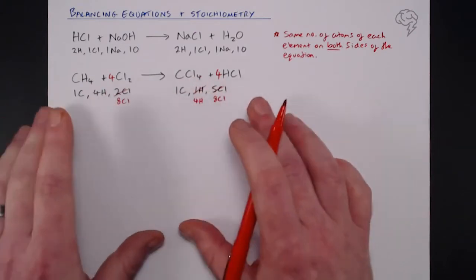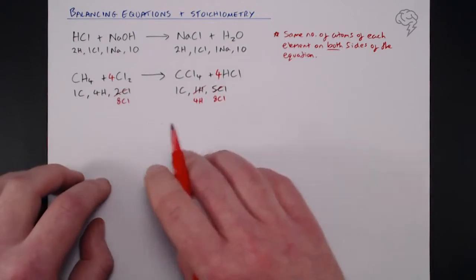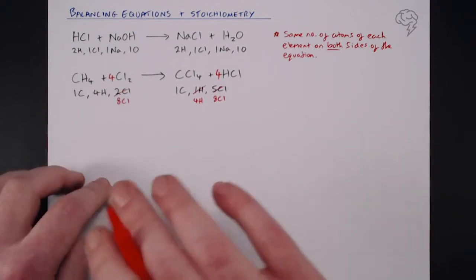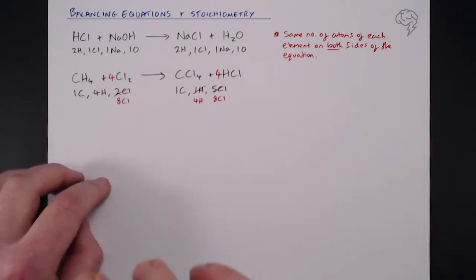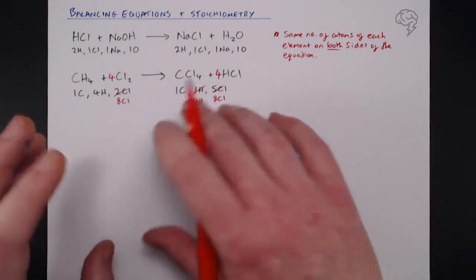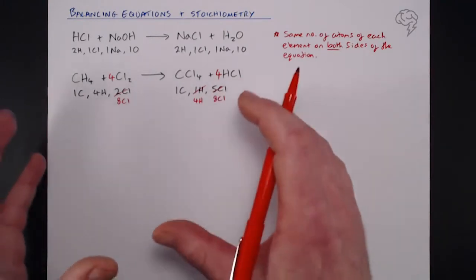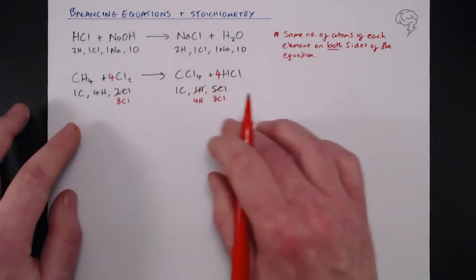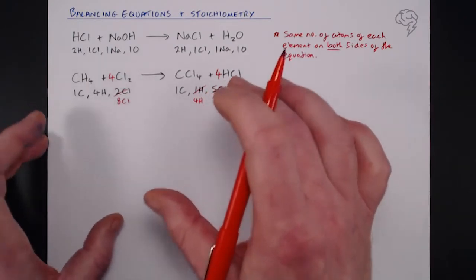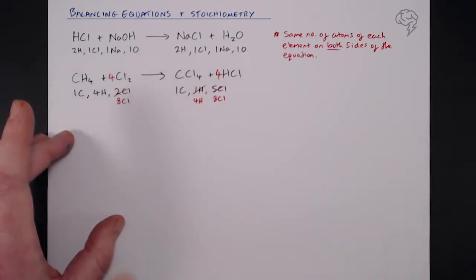Whenever you finish balancing an equation — whether you're doing AS, A2, university, or working as a scientist — always double-check, triple-check your equation once you've written it.